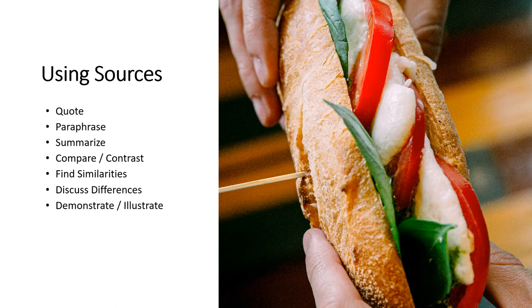There are many ways to use sources in your academic assignments. You can directly quote a source — this is where you share text word for word within quotation marks in your paper. You can paraphrase a source, which is when you share something a source says but rewrite or explain the argument in your own words. Similar to paraphrasing, you can summarize, which is where you succinctly explain an argument or point a source makes in your own words.